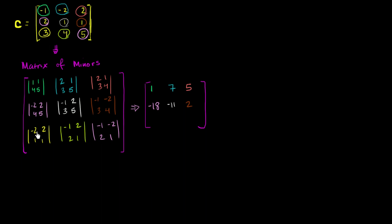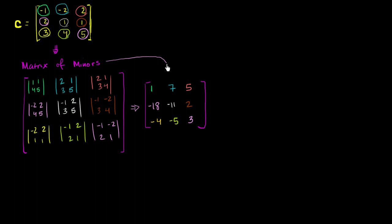We have 3 left for the bottom row. Negative 2 times 1 is negative 2 minus 1 times 2, so negative 2 minus 2 gets us negative 4. Then negative 1 times negative 1 is 1 minus 2 times 2, so 1 minus 4, which is negative 5. Finally, negative 1 times 1 is negative 1 minus 2 times negative 2, so negative 1 minus negative 4, which equals negative 1 plus 4, giving positive 3.